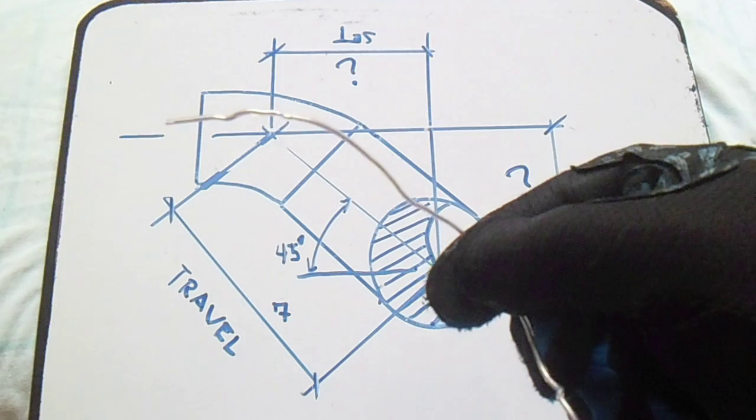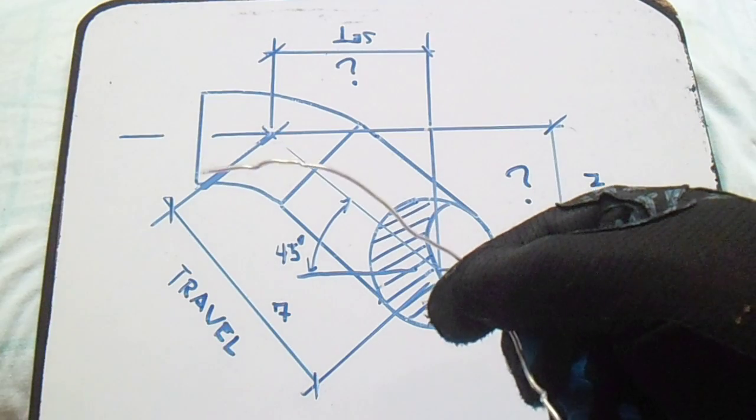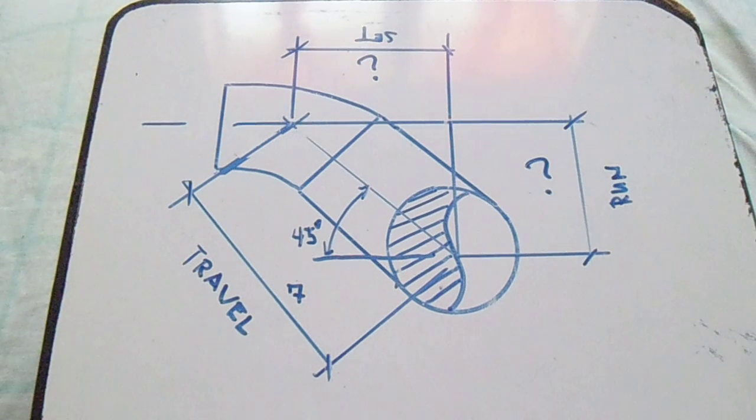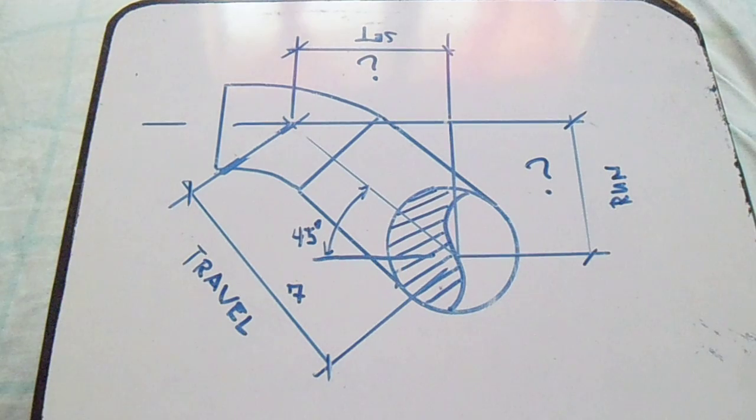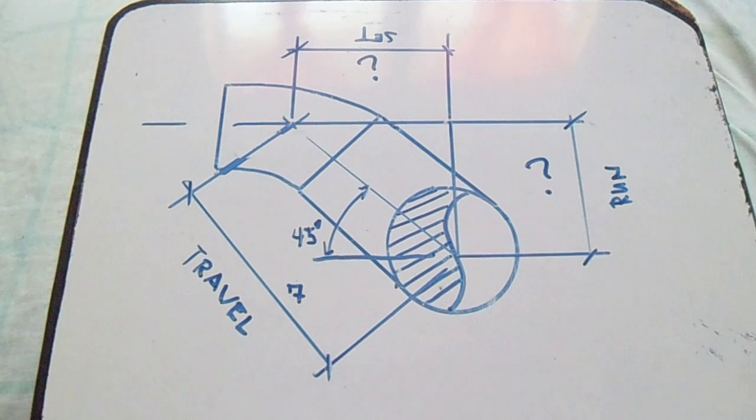How many fittings? Fittings is one, two. So we have two fittings. Now we will compute this set and run. Our given is 45 and travel is 7.